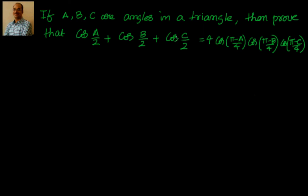If a, b, c are angles in a triangle, then prove that cos(a/2) + cos(b/2) + cos(c/2) equals 4 times cos((π−a)/4) times cos((π−b)/4) times cos((π−c)/4). So just before going ahead, we will write down what we know: a plus b plus c equals 180 degrees or π.